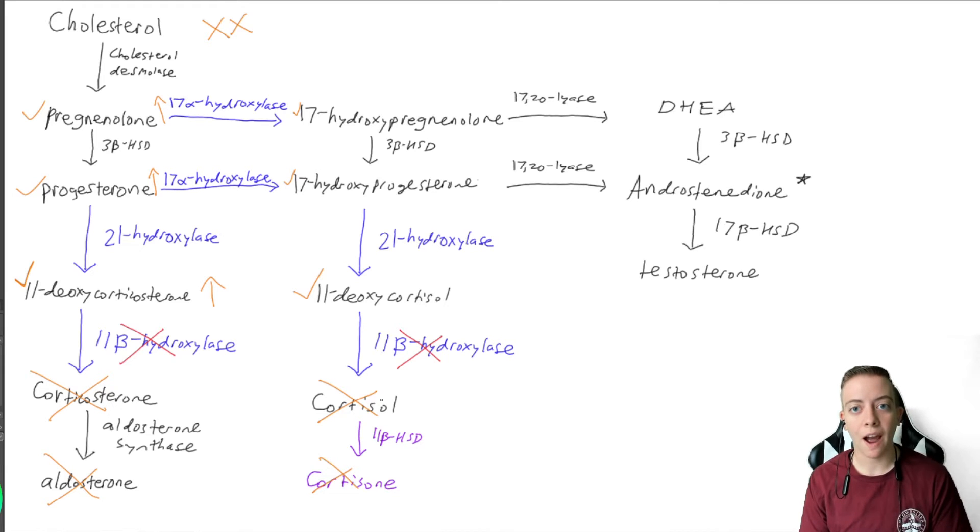Can't go that way, have to go backwards. Pathway is going to back up. So we're going to have increased 11-deoxycortisol, increased 17-hydroxyprogesterone, increased 17-hydroxypregnenolone. So where else can we go?